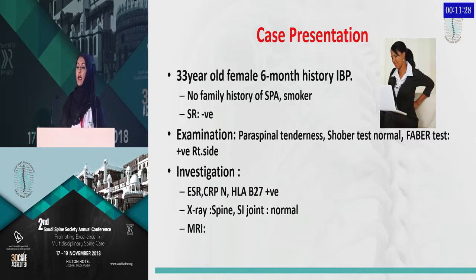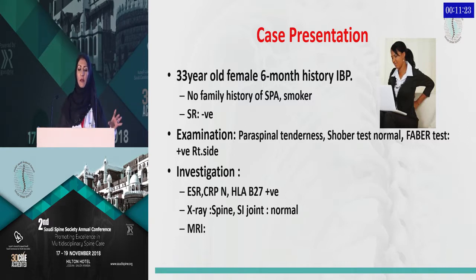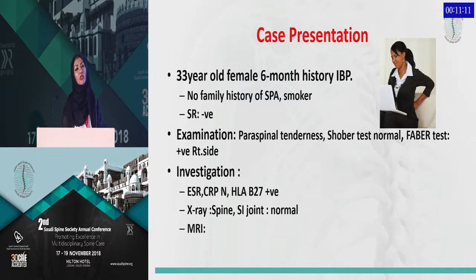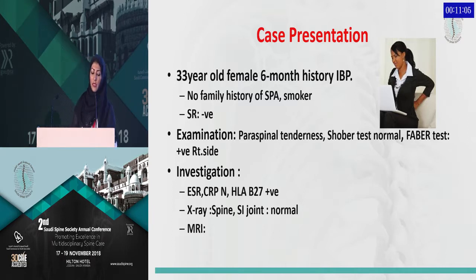Let's go over a case. I have a 33-year-old female who presented with a six-month history with the classical inflammatory back pain. She didn't have any family history of spondyloarthritis, but she was a smoker. Her systemic review was negative, and on physical examination she had signs consistent with SI joint involvement.